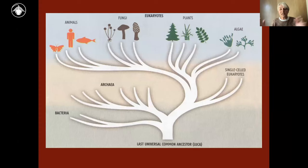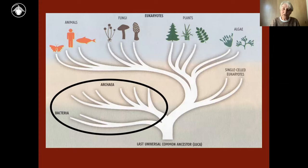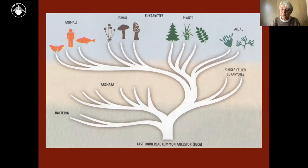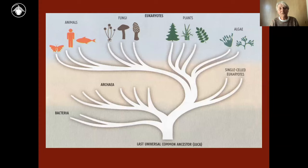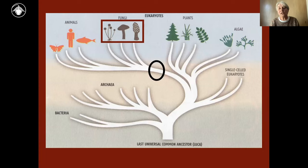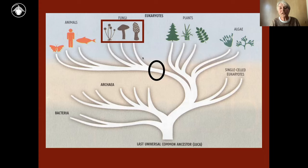What are fungi in the grand scheme of things? Here we have a simplified tree of life with bacteria and archaea at the bottom, then a big branch of eukaryotes — we have plants, we have animals, and in between we have the fungi. It's important to note that fungi and animals share a much more recent common ancestor than either do with plants, so they have more in common with each other than with plants.